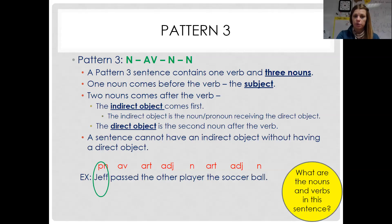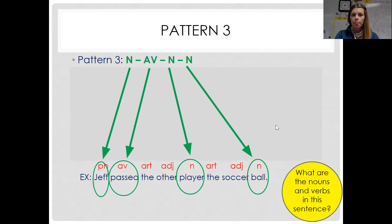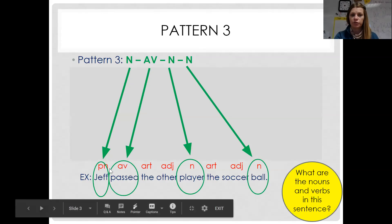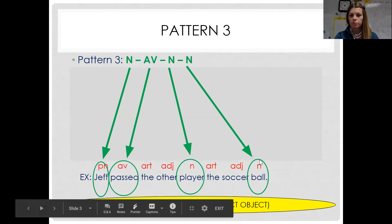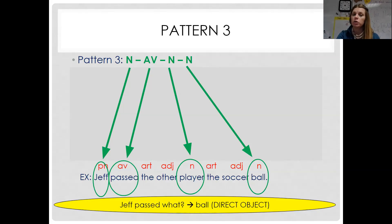So we have Jeff, passed, player, and ball. And if you look directly up at our pattern here and following these, what we have here and what I just said out loud, subject, it's our first noun, action verb, direct object, and then indirect object. So what I just said was Jeff passed what? The ball. Logically, that just makes sense. You can't pass a player, like you can't throw a player over to somebody else. It doesn't make sense. Jeff passed what? The ball. To whom? Player. The indirect object. It's indirectly receiving that verb. So it's receiving the direct object.